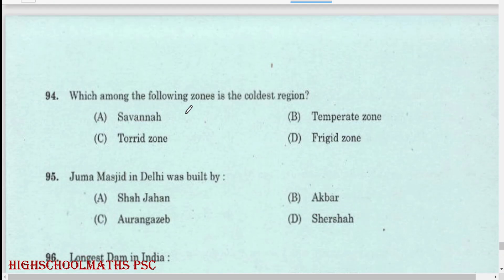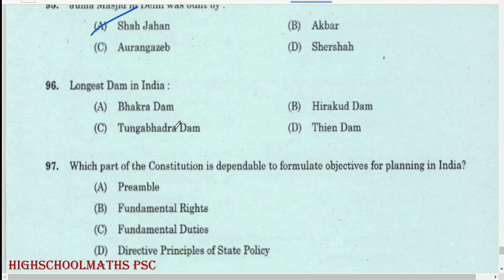Which among the following zones is the coldest region? Frigid zone. Jama Masjid in Delhi was built by Shah Jahan. Longest dam in India: Hirakud.